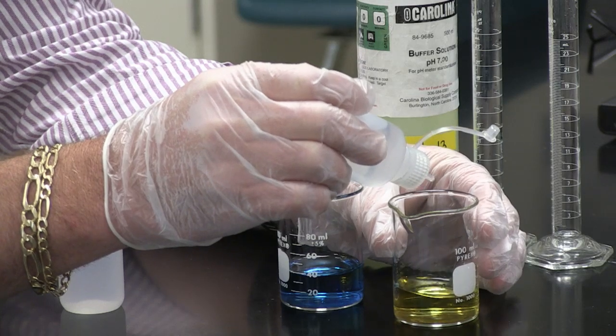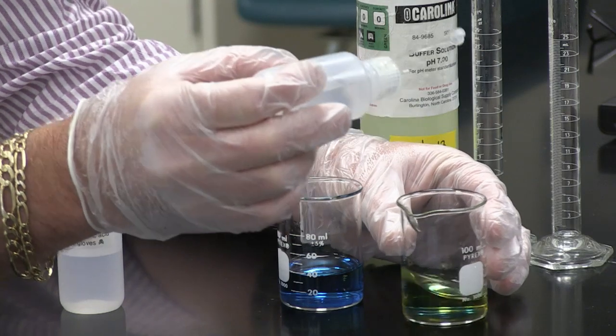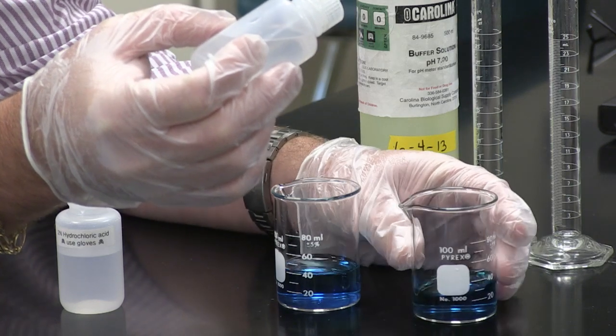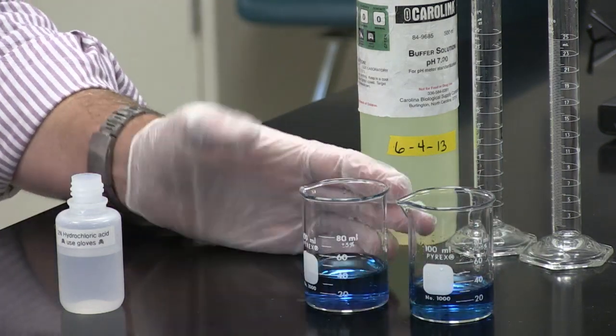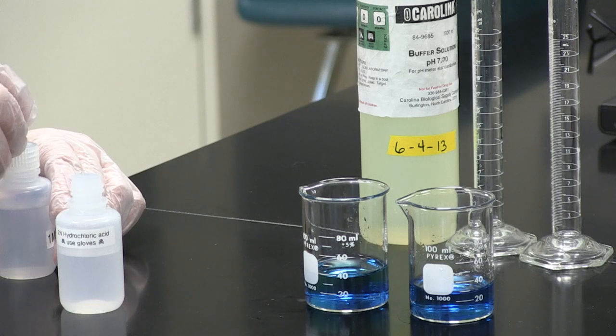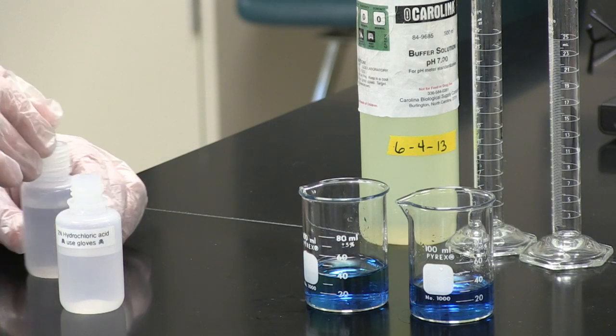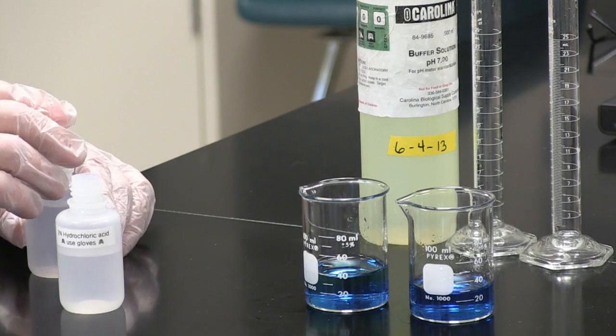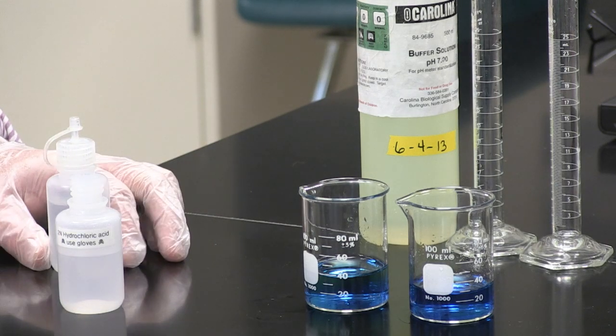Let's see what we have here. Three drops and we are back to a blue. So the point of a buffer is buffers prevent rapid changes in pH by converting strong acids into weak acids and by converting strong bases into weak bases.